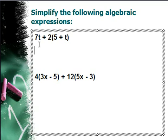Let's make it happen here. Okay, so after I distribute, with a 7t, there's no need to distribute anything there, so I can just stay. But if I give a 2 to the 5, that's going to be a 10. And then if I give a 2 to the t, that's going to be 2t. Okay, so that's after I distribute into the parentheses.